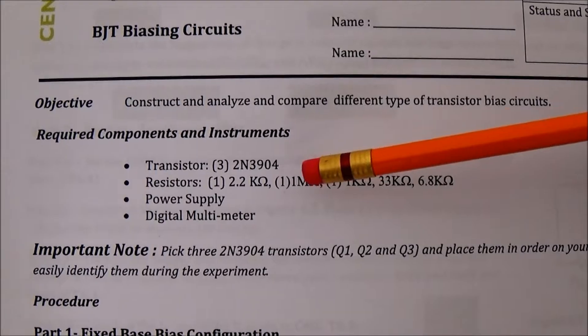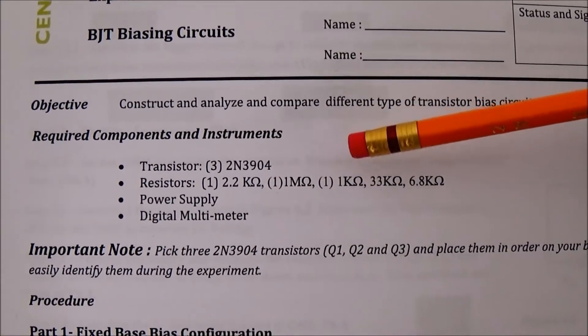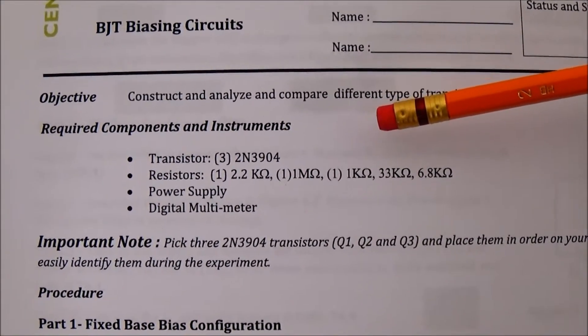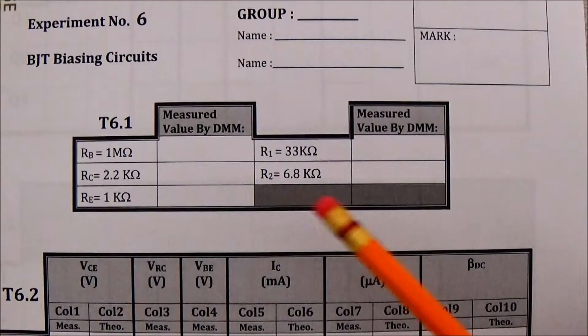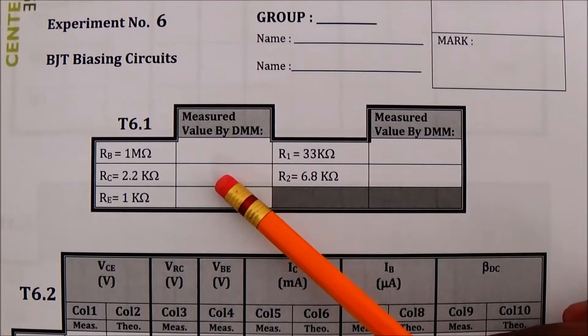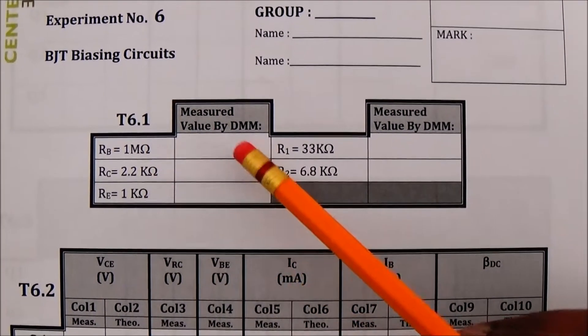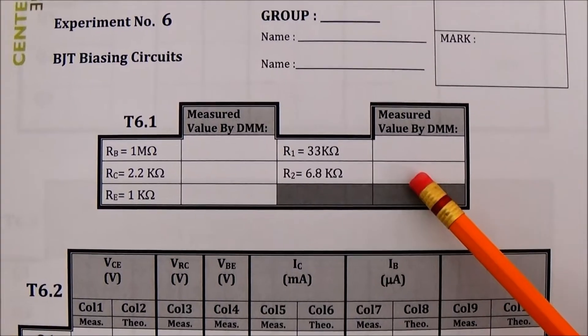Here you see the components required for building all three circuits. To start with the experiment you need to measure the resistance values and note them in the corresponding places.